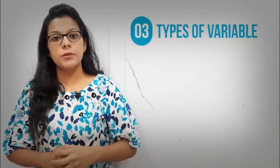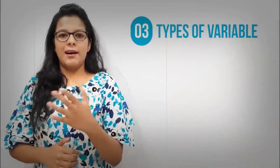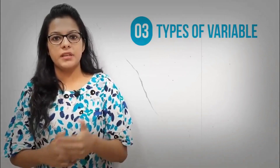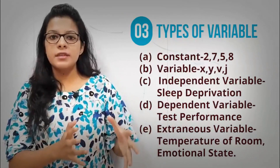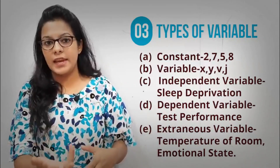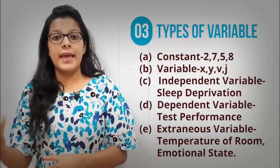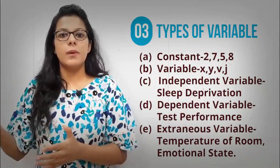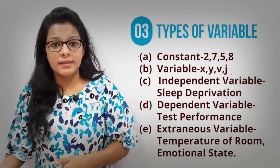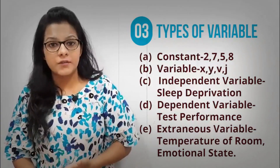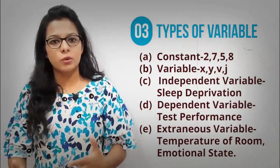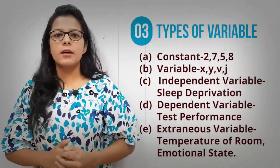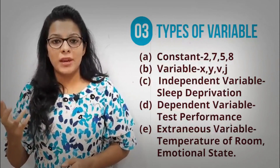The next important topic is types of variables. Before knowing types of variables, it is important to know what a variable is. You all have studied maths, and in algebra there were two things: constants — numeric values like 2, 5, 7, 10, 25 — and variables — x, y, and z — whose values vary. So a variable is anything that can vary. For example, if I want to test sleep deprivation on test performance, those are two variables.